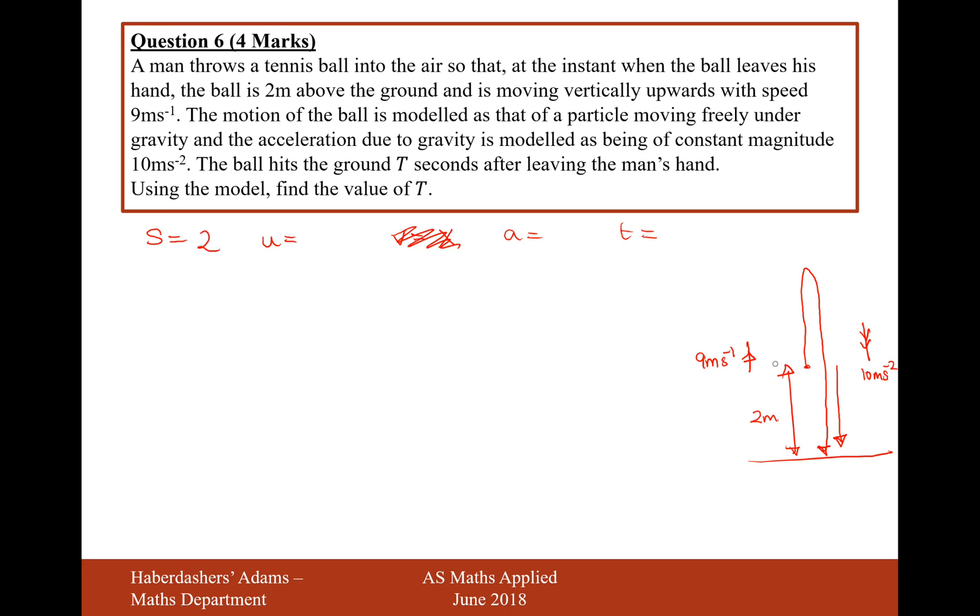The ball is initially travelling upwards with a speed of 9 metres per second. So because I've set downwards to be positive, I'm going to set u equal to minus 9. And gravity, which is 10 metres per second squared, acting downwards, where I've set downwards to be positive for this question.